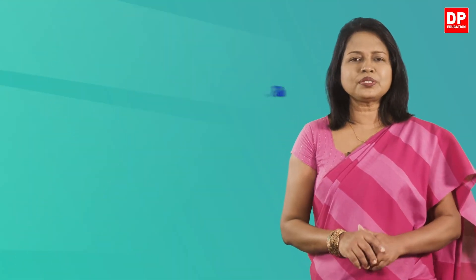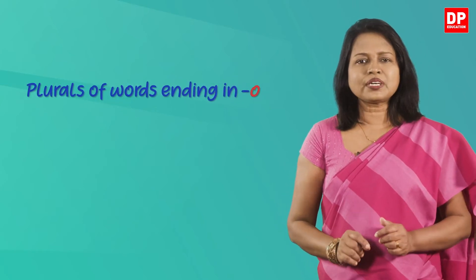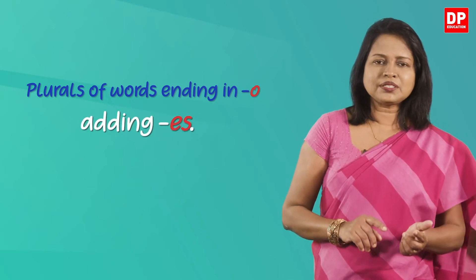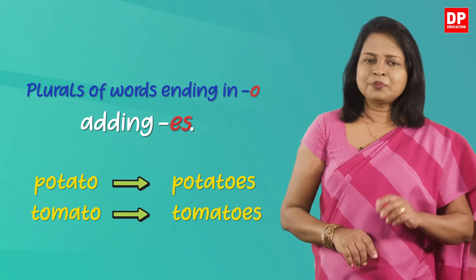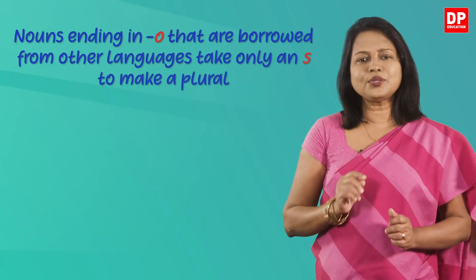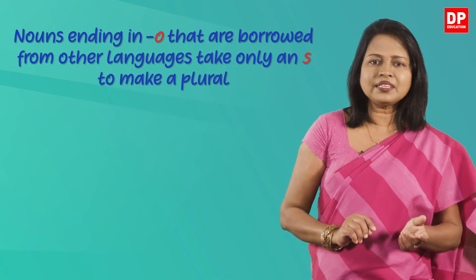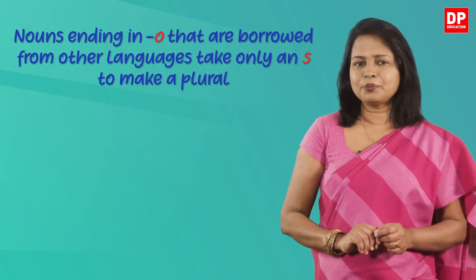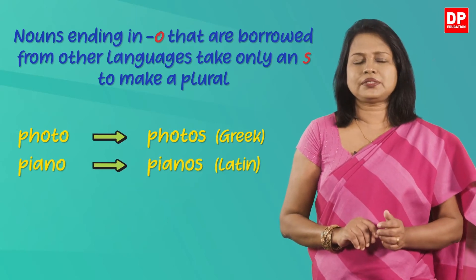Next, we will study how to form the plurals of nouns ending in o. Plurals of nouns ending in o are usually made by adding es. So potato becomes potatoes, tomato becomes tomatoes. But some nouns ending in o that are borrowed from other languages like Greek or Latin take only an s to make a plural. So photo becomes photos and piano becomes pianos — you don't add es, only s.